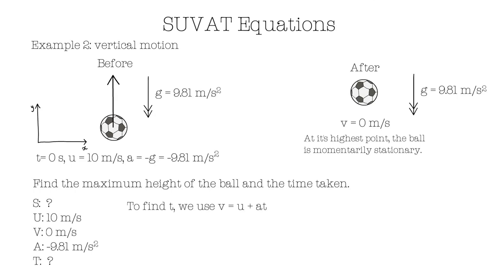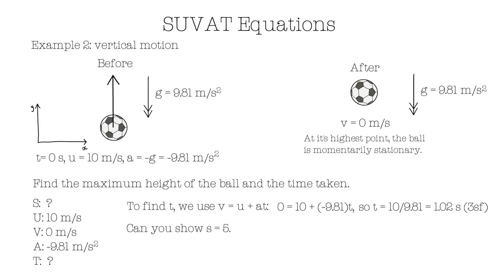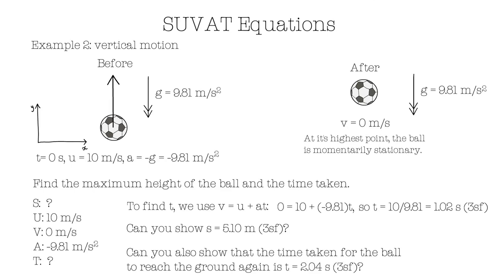We have three known variables, so we can use the equations to find the unknowns. To begin with, we can use V equals U plus AT to find time. Substituting the values: 0 equals 10 plus minus 9.81 multiplied by T. This gives us T equals 10 over 9.81, or 1.02 seconds to three significant figures. Can you show that the displacement, or highest point, is 5.10 meters to three significant figures? Can you also show that the time taken for the ball to reach the ground again is 2.04 seconds to three significant figures? Quick tip: you can work with the full picture so that U equals 10 and V equals minus 10, or assume by symmetry that the time to reach the highest point equals the time to fall back to the ground.